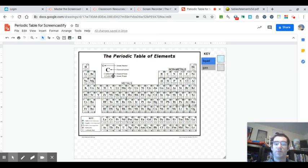So what I want you to do is print this periodic table. I've posted a link in the assignment, and then we're going to start labeling it a little bit at a time. So step one is to just get the lay of the land here.